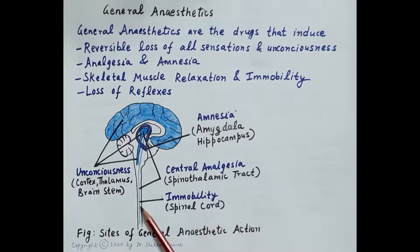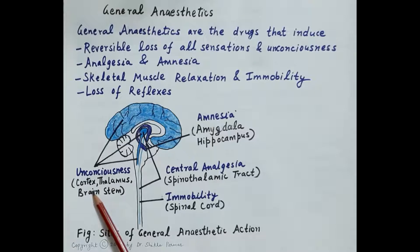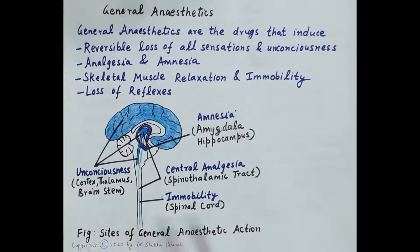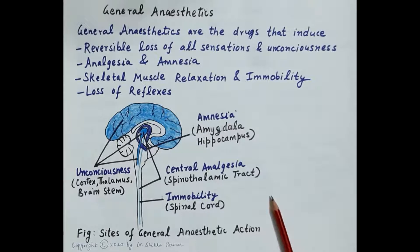Unconsciousness is mediated by the cortex, thalamus, and brain stem, and this unconsciousness is produced by the potentiation of GABAergic inhibition. These general anaesthetics are commonly used for major surgeries like knee and hip replacement surgeries, heart surgeries, transplantations, etc.